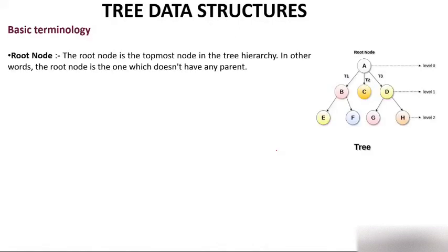Now, basic terminologies. Root node: the root node is the topmost node in the tree hierarchy. In other words, the root node is the one which does not have any parent. If somebody asks what is the parent of root, there is no parent — root is the node which does not have any parent.